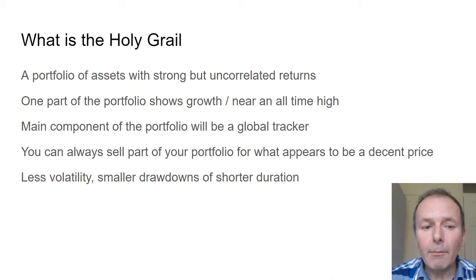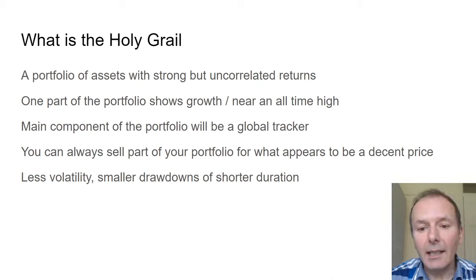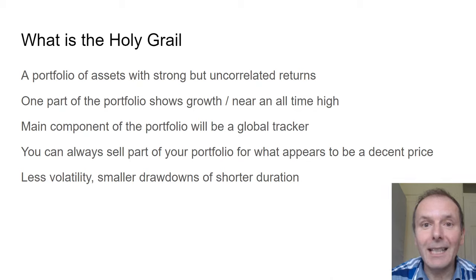You've got at least one part of the portfolio that shows growth or is near an all-time high, and the main component will be a global tracker. The idea is that you can always sell part of your portfolio for what appears to be a decent price — you can look up prices every day. It's not necessarily the true value of the asset, but at least one part will have a price quite near the highest you've ever seen, and you won't feel bad about selling it for income in retirement.